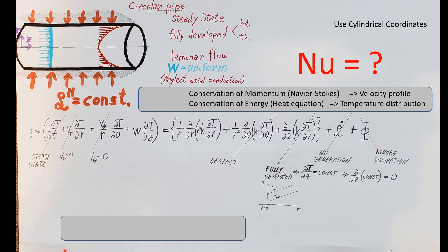Here is the heat equation in cylindrical form. Let's see what we can cross out. Steady state means there is no change with respect to time, so the first term is gone. This is a one-dimensional flow, meaning every molecule of the fluid is heading only in the z direction — none in the r direction or swirling in the theta direction. So we cross out those two terms. They told us to neglect axial conduction, so that term is gone too.